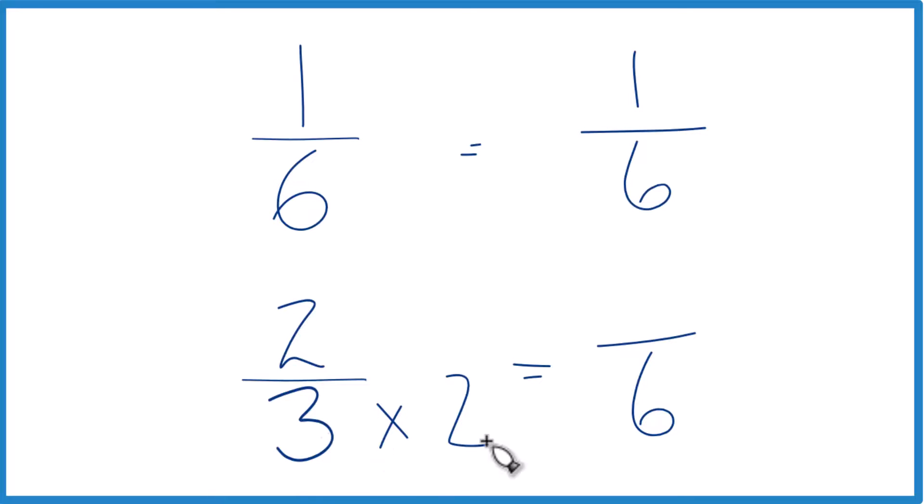But we can't just multiply the denominator by 2. We need to multiply the numerator by 2 as well. 2 over 2 is 1, so we're just multiplying by 1. We don't change the value, just the way it's represented. 2 times 2 is 4. And 4/6 is the same as 2/3.